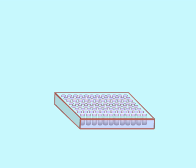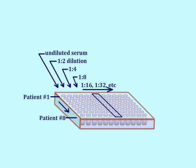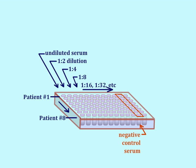To measure antibodies against the antigen, the particles are added to the wells of a 96-well microtiter plate. Sera taken from different patients are added to the wells in the first column, and two-fold dilutions of the sera are prepared in the rows. A known negative and positive control serum are added in the last two columns.